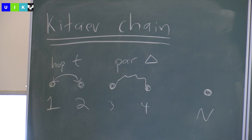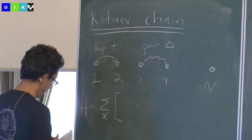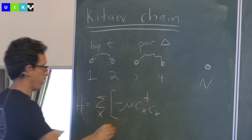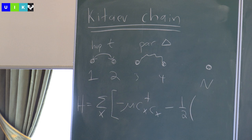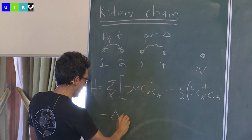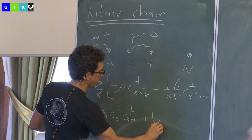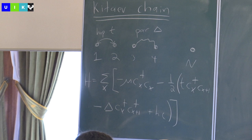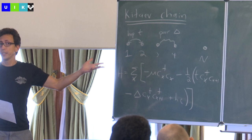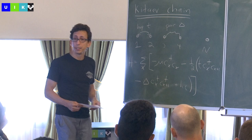Here's the Hamiltonian — a sum over sites labeled by X. We'll give those spinless fermions, described with operators Cx and Cx-dagger, a chemical potential. Just for later convenience, I'm going to introduce a factor of one-half in the hopping and pairing terms. The hopping term will look like T·Cx-dagger·Cx+1, and then there's a pairing term — I'll put a minus sign in front — times Cx-dagger·Cx+1-dagger. We add the Hermitian conjugate to make it a real Hamiltonian. I'm going to assume T and delta are both real numbers. We have periodic boundary conditions, implying translation symmetry, and we can efficiently exploit that by passing to momentum space.